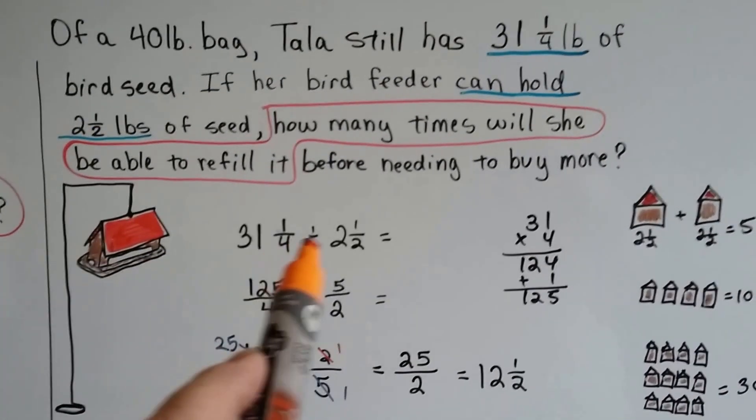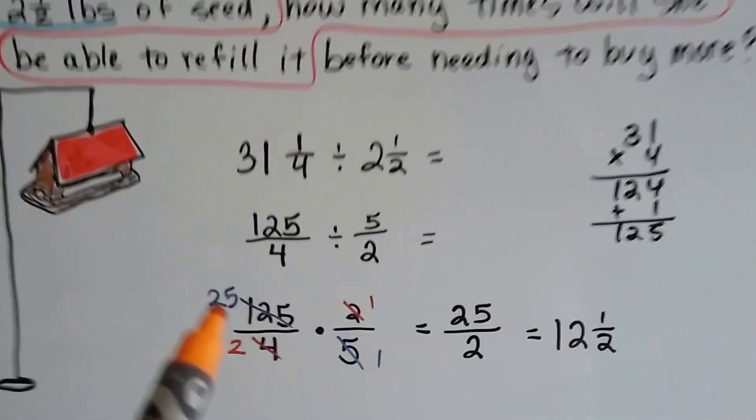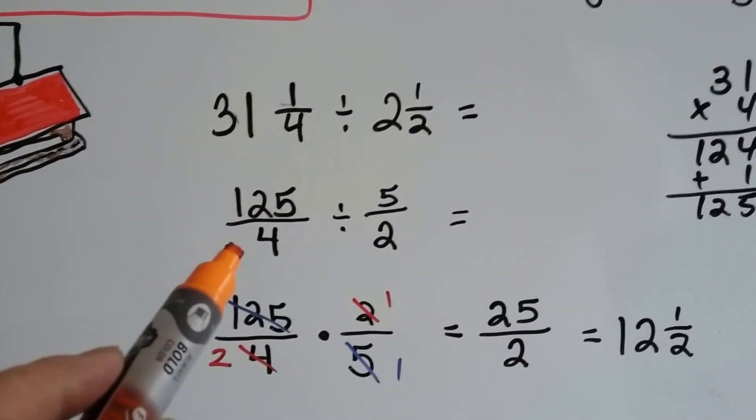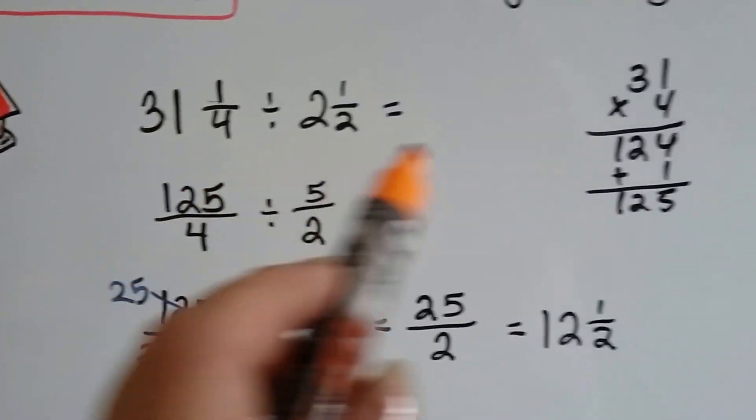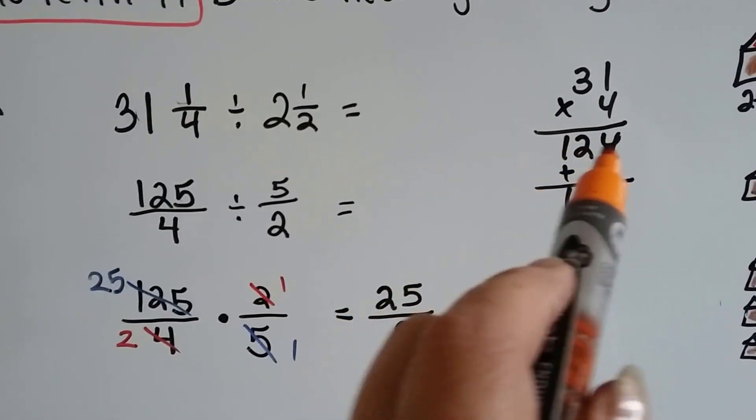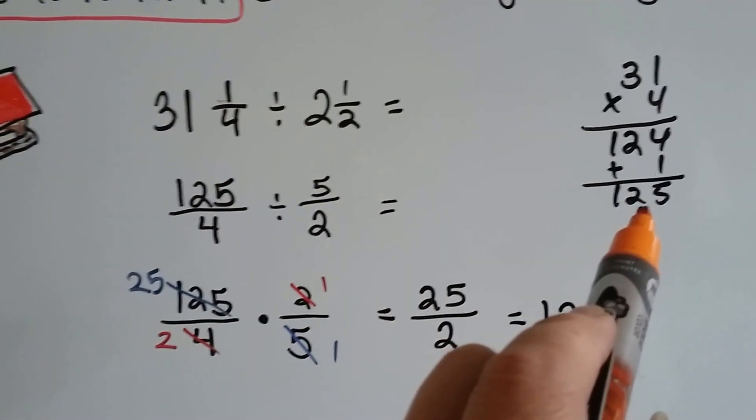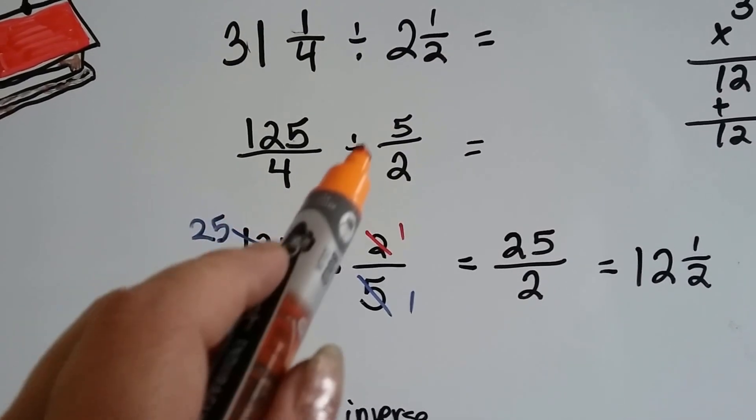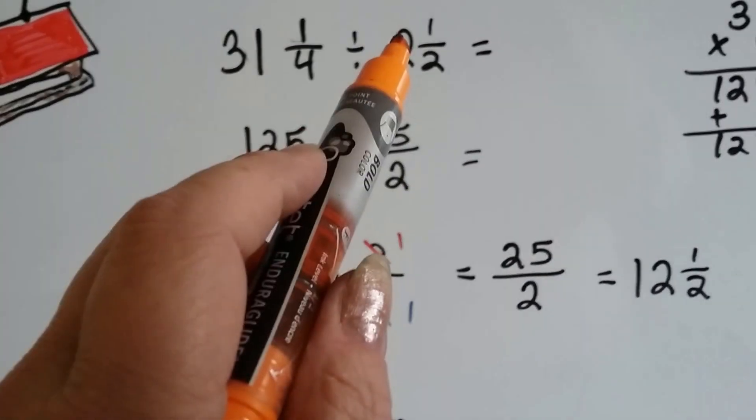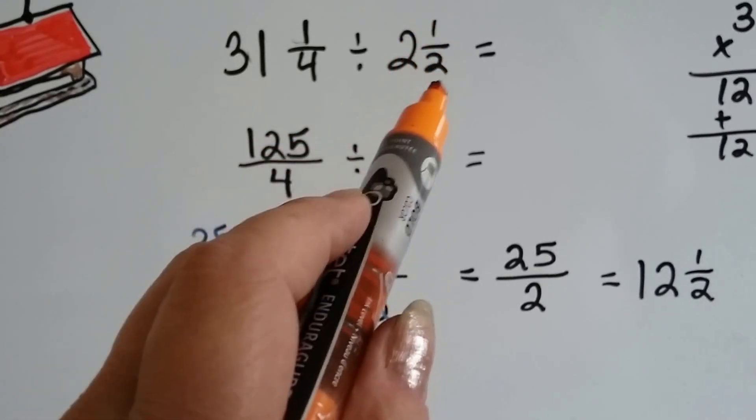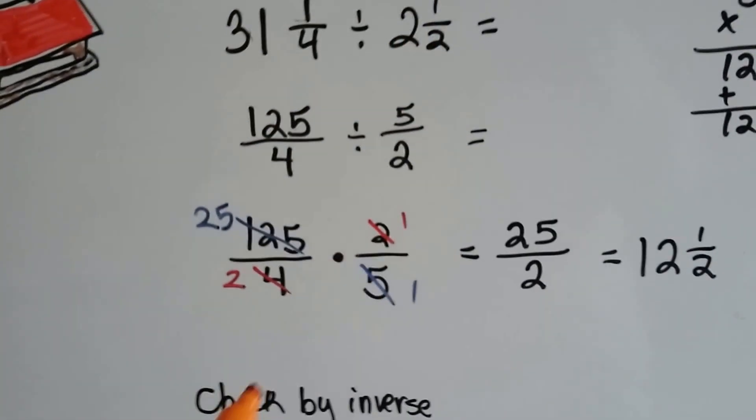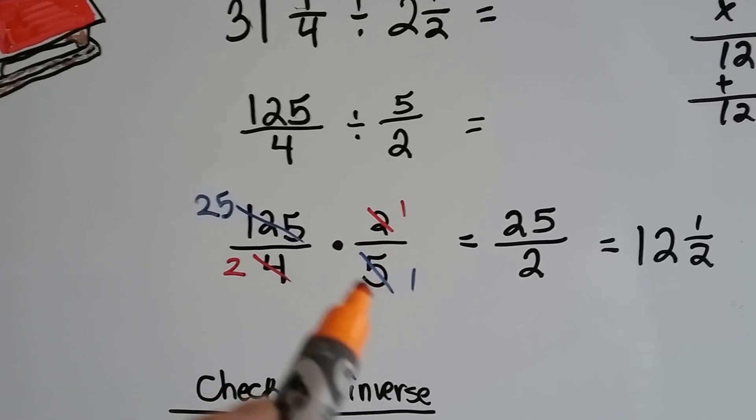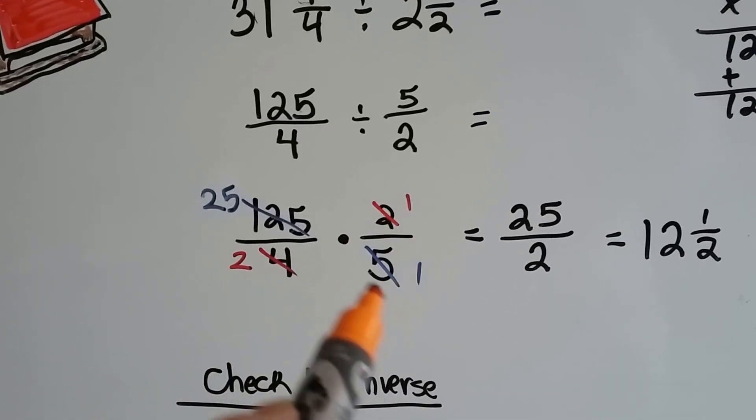So we're going to do thirty-one and a fourth divided by two and a half. We need to turn thirty-one and a fourth into an improper fraction. Thirty-one times four is a hundred and twenty-four. We add the one numerator and we get one hundred and twenty-five. Now we have one hundred and twenty-five over four divided by five halves, because this is two times two is four and one is five over two. Now we have one hundred and twenty-five over four times the reciprocal two-fifths, because we flipped it around.